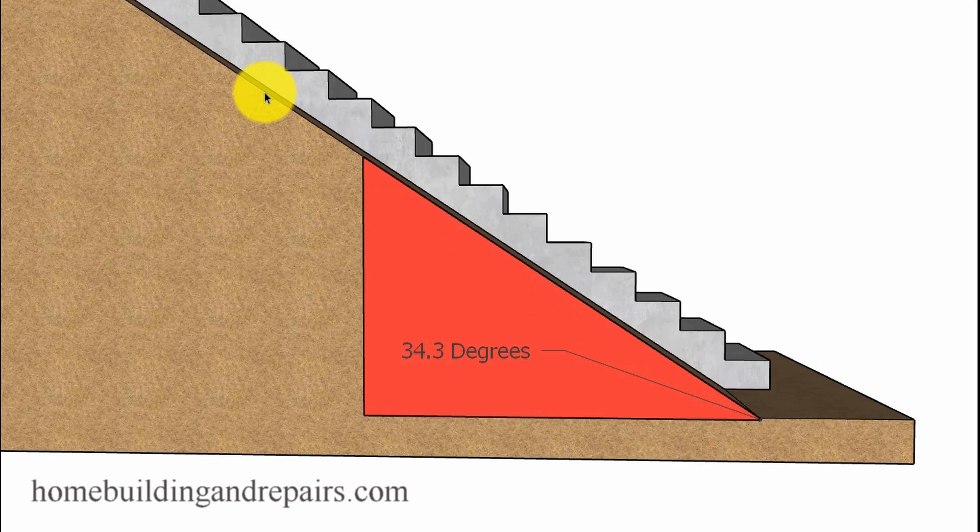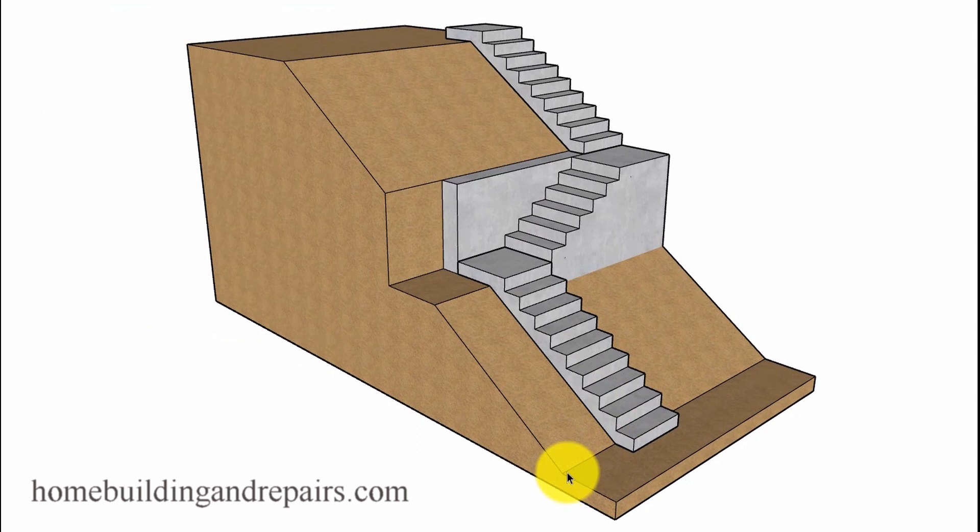If your hillside is somewhere close to this, between or under 37 or maybe even 38 degrees, you're not going to have a problem. But if you do have a hillside that's a little steeper, you might be able to solve your problem by just putting a retaining wall in and then changing the direction of the stairway.